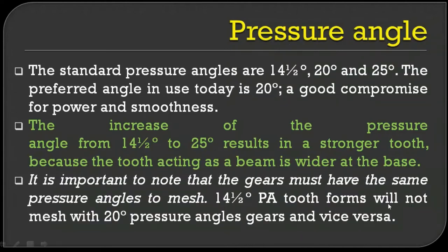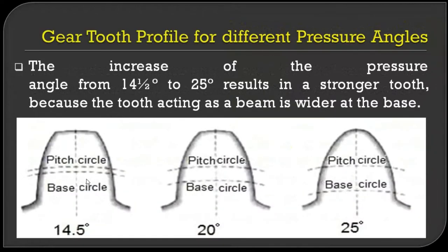For example, 14.5-degree pressure angle gears will not mesh with 20-degree pressure angle gears and vice versa — the pressure angle must be the same for both gear wheels. Looking at gear tooth profiles for different pressure angles: 14.5 degrees, 20 degrees, and 25 degrees pressure angle.